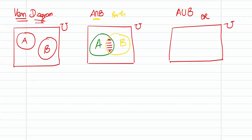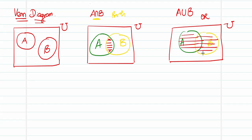For A∪B, a collection of elements either in A or in B: you take the portion of A, and extend it to include the portion of B as well. So the union covers the entire area of both circles combined — either in A or in B. This is how we represent union using a Venn diagram.